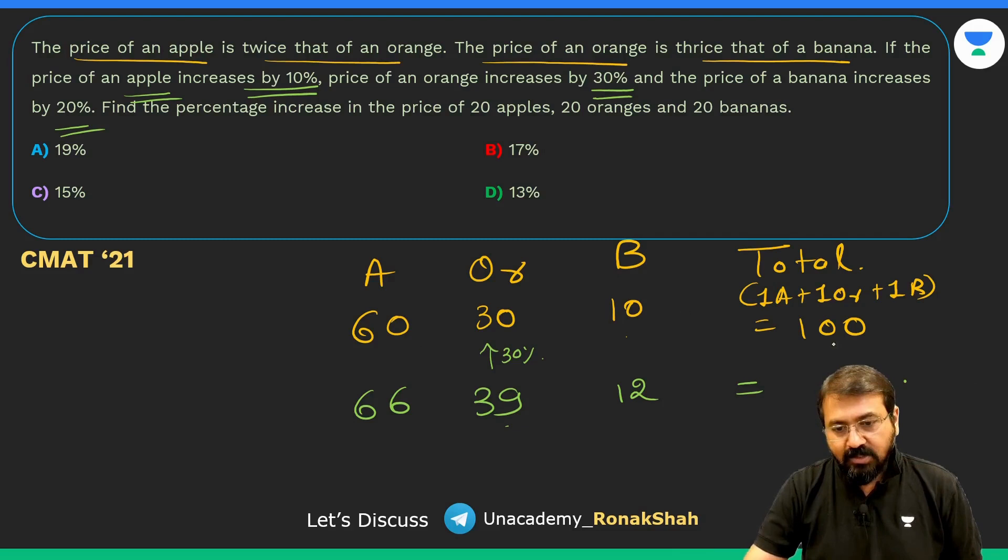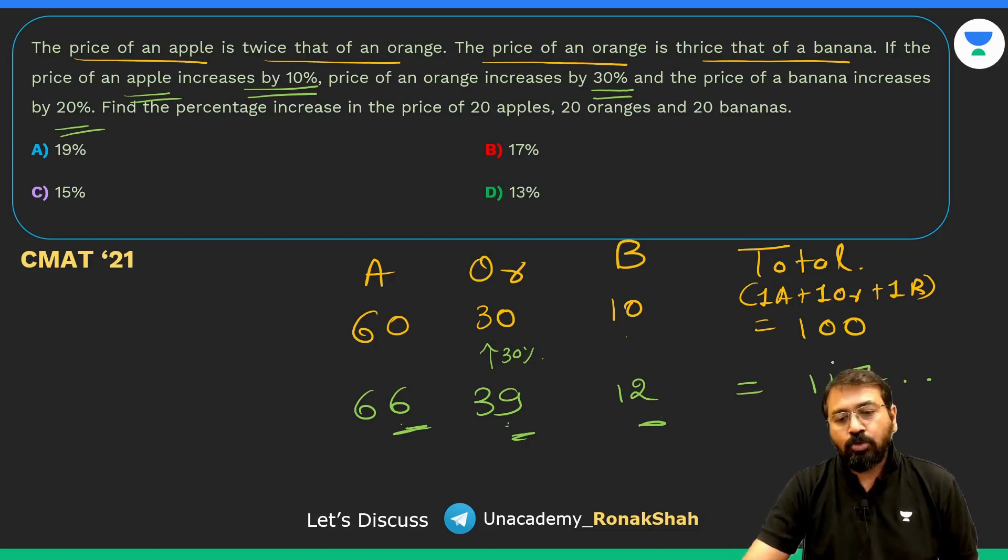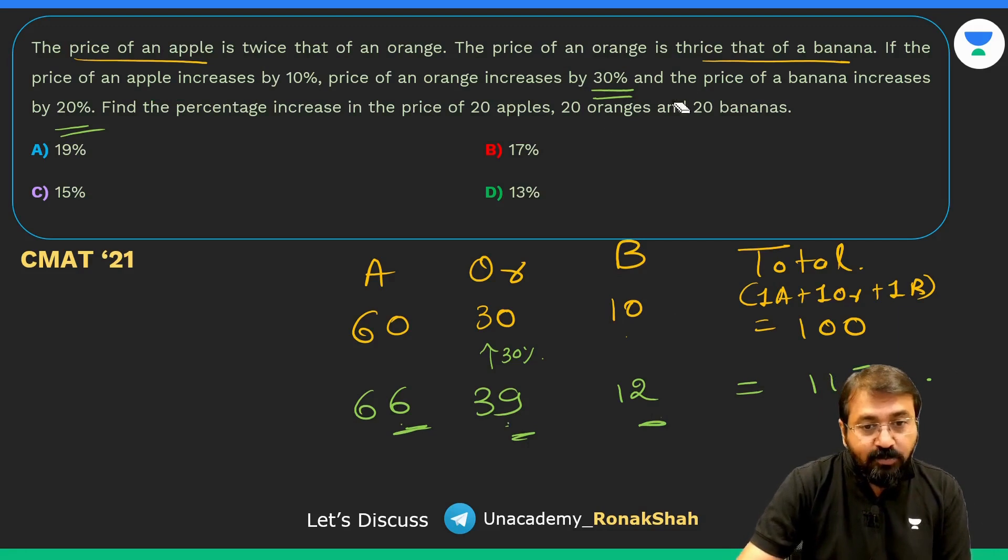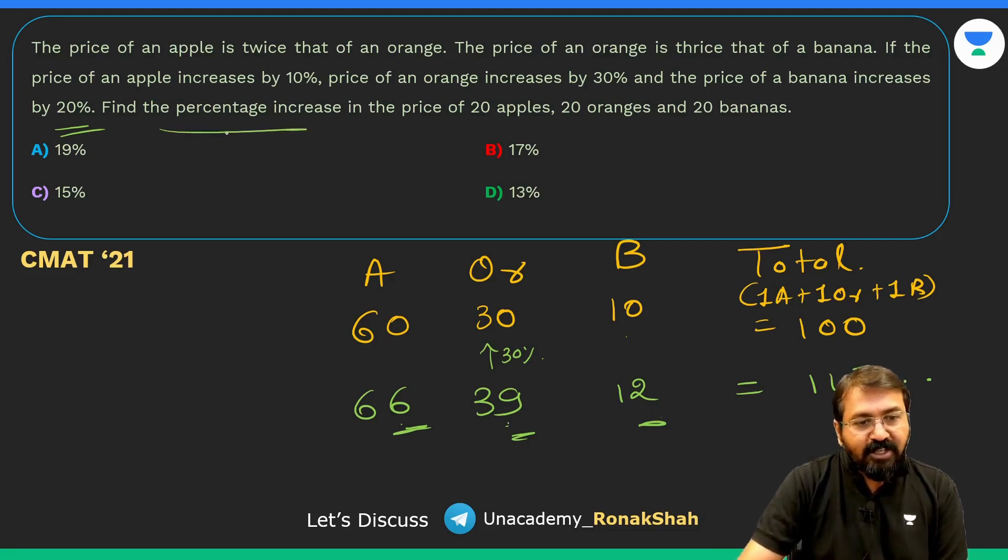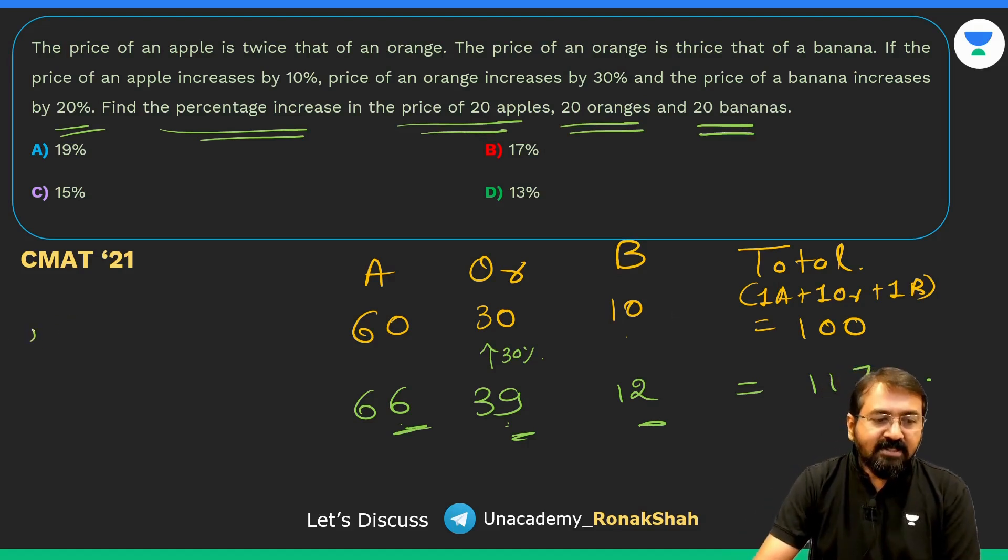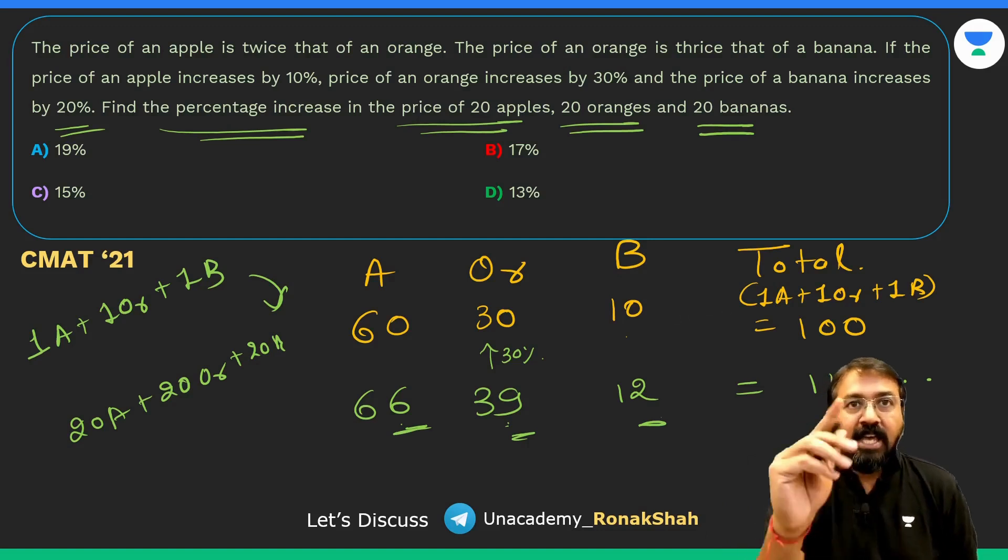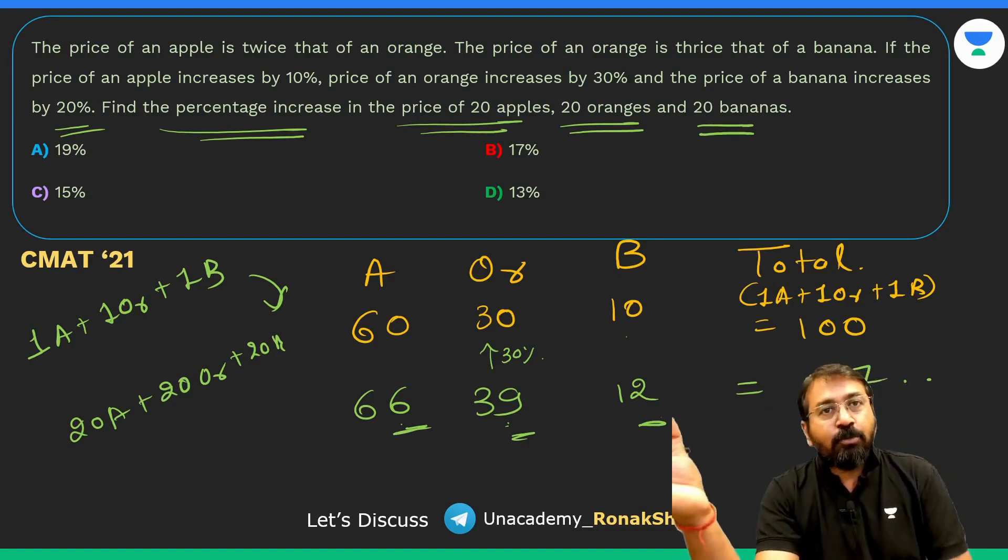So this is going to be 117. Just increase we are considering, only increase: 6 plus 9 plus 2, so it's 7 more, so 117. Now our question is very tricky. The question is find the percentage increase in price of 20 apples, 20 oranges and 20 bananas. If I compare 1 apple, 1 orange and 1 banana, or 20 apples, 20 oranges and 20 bananas, you know the percentage change will always remain same. Are you getting this point?